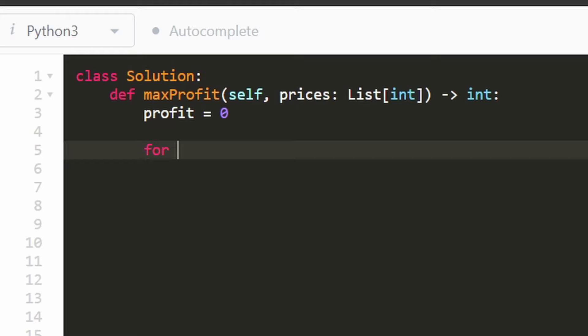And we are going to have a single pointer, i, which is going to tell us where we currently are. And we're going to actually skip the first value of the array. So we're going to start from index one all the way to the end of the prices input array.